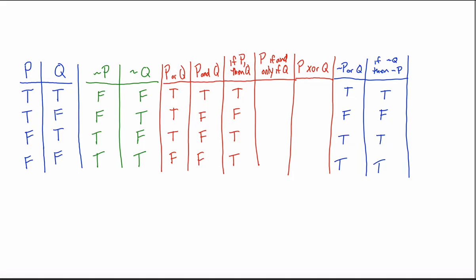First comment: 'not P' can be written in different ways. The way I wrote it is with the little squiggly line (tilde) in front of the P, but it can also be written with the word 'not' in English. You can write it as negative P, or P with a little subscript C for 'P complement,' or P with a bar on top, or P with a little apostrophe. All of these mean 'not P' — you just look at P and put the opposite value.